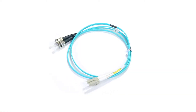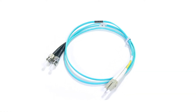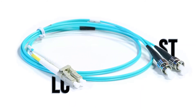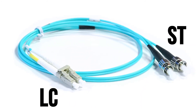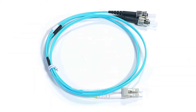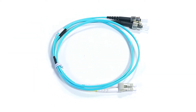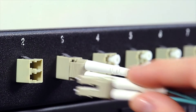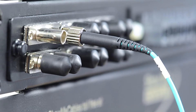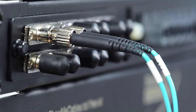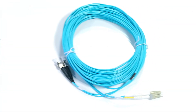This is an LC to ST 10 gigabyte multimode duplex fiber cable. It features two LC connectors on one end and two ST connectors on the other end. An LC connector has a small form factor design with a molded plug casing that has a push and pull locking system, while an ST connector uses a stick and twist locking system. It is available in lengths from 1 to 15 meters.